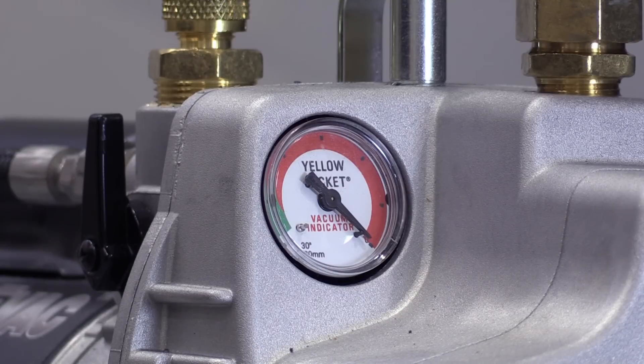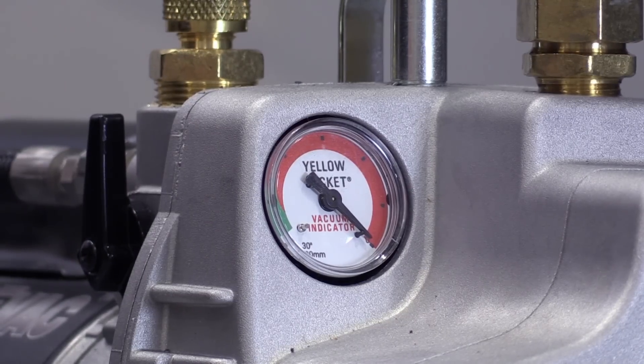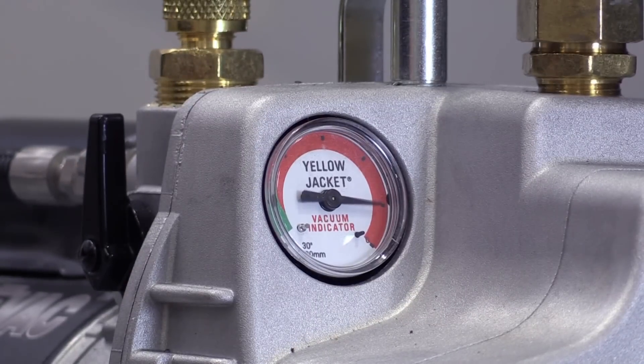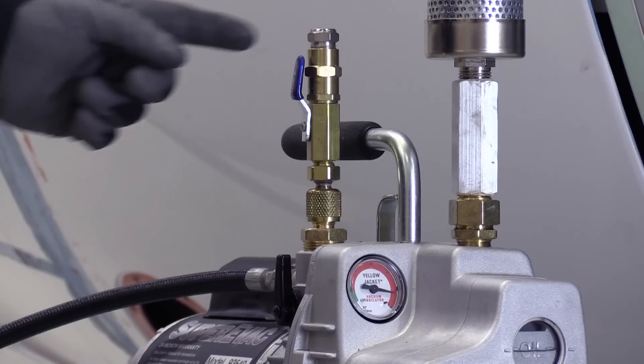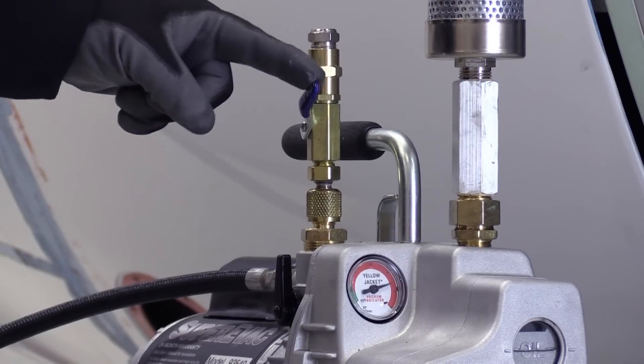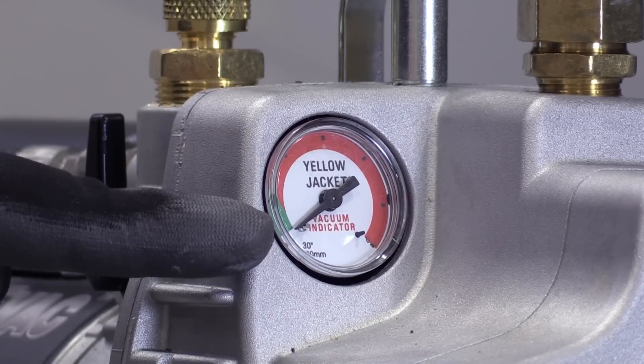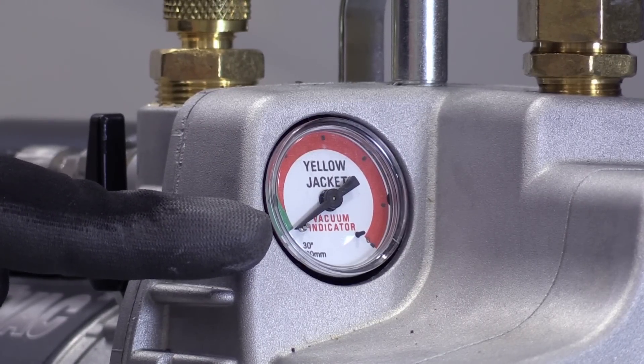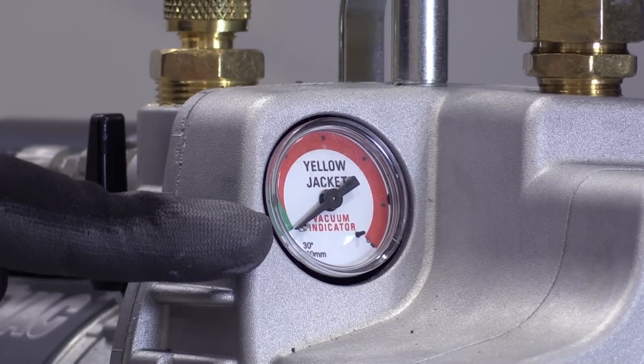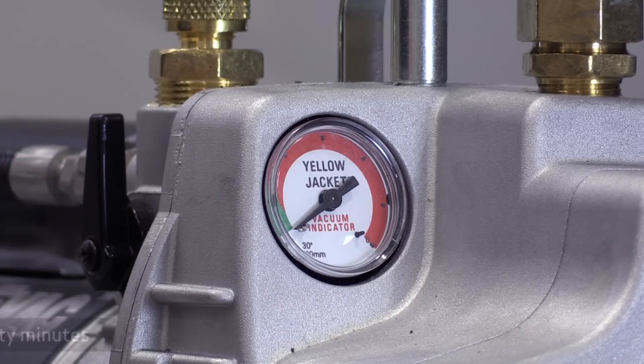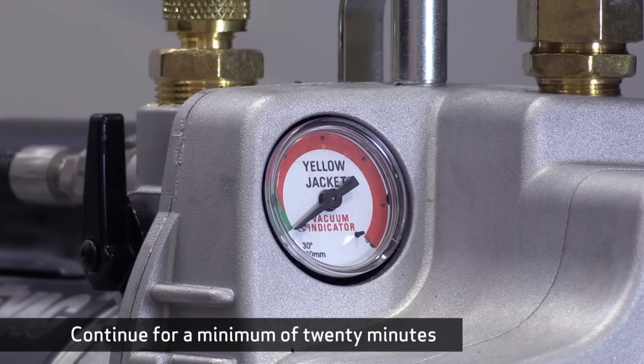Now we can turn on our vacuum pump. And once it reaches speed, we can close the pressure relief valve. And we want to verify on the gauge that we have achieved a vacuum of at least 29 inches of mercury, and we want to keep that vacuum on the PS3 port for a minimum of 20 minutes.